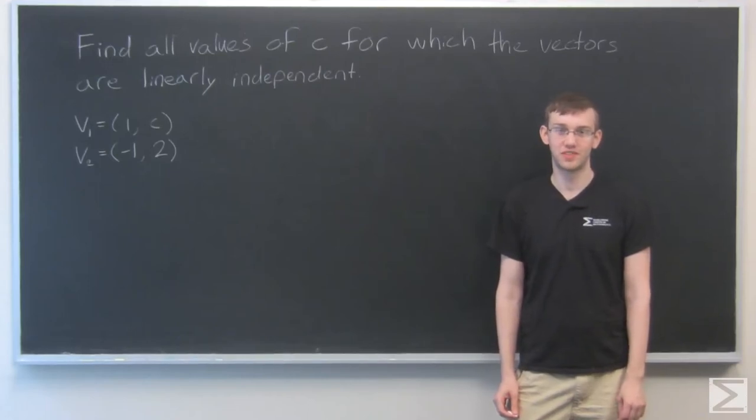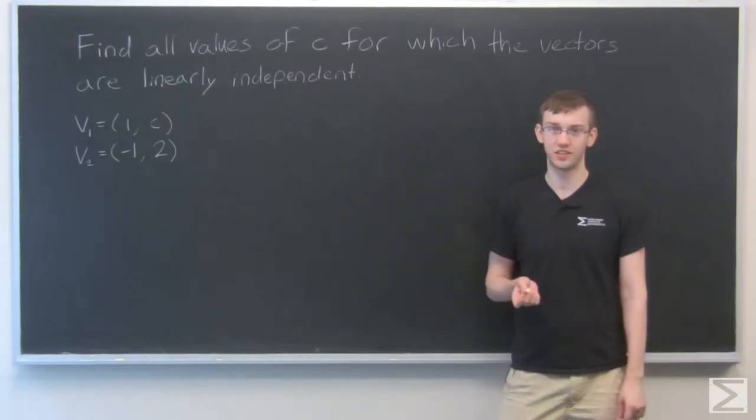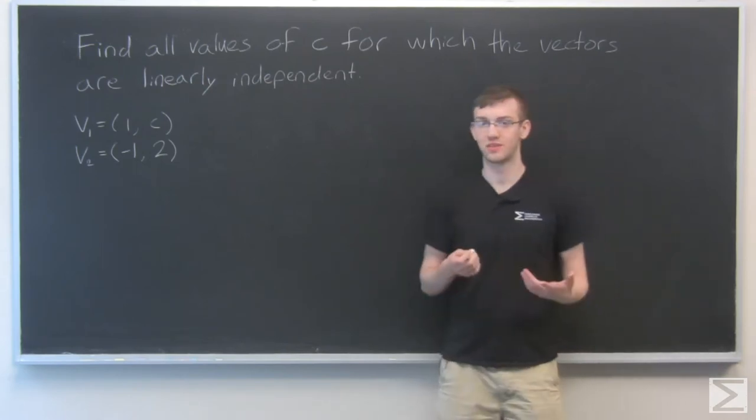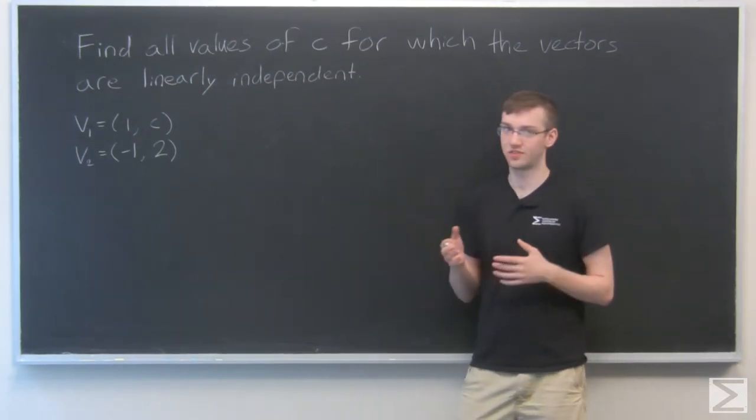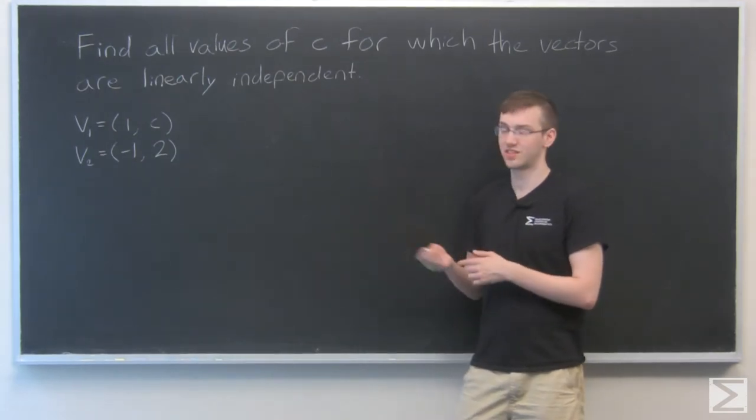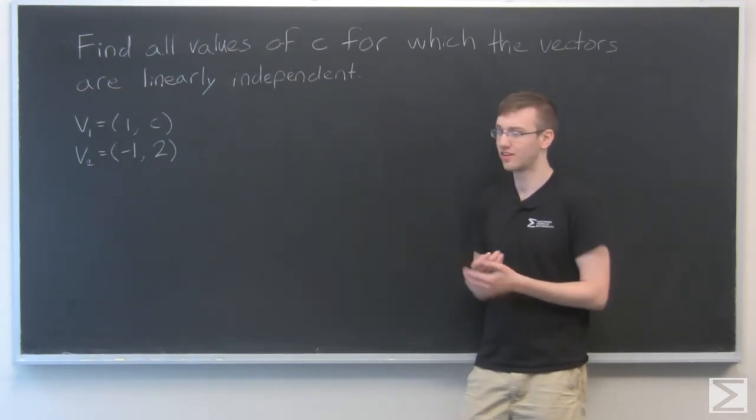For this problem, we need to find all values of C for which these two vectors are linearly independent. That basically means they can't be linearly dependent, which for only two vectors with two numbers each means they can't be multiples of each other.